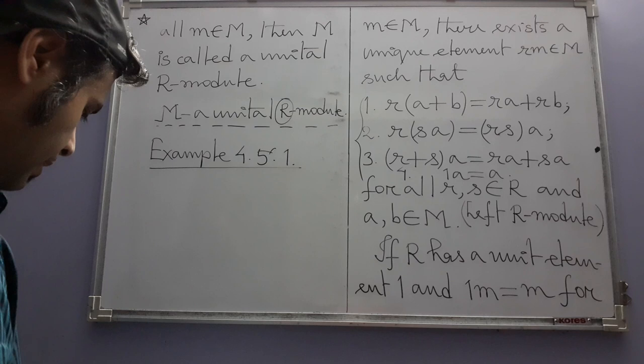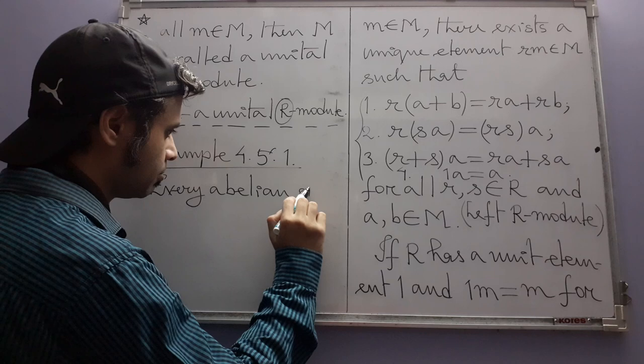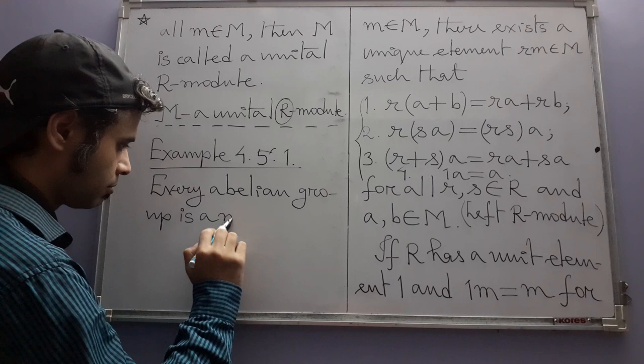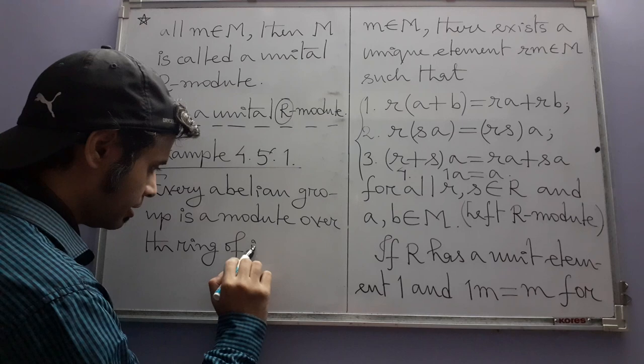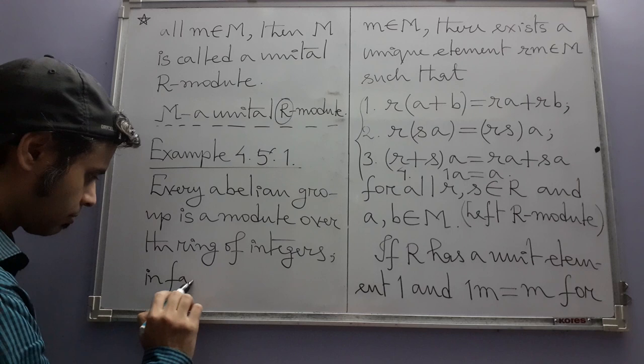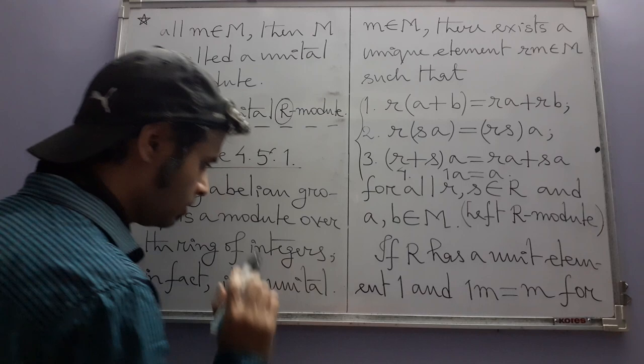The first example looks and sounds very nice: every abelian group is a module over the ring of integers, and in fact it is unital. This is a statement we will prove in one of the exercises, but let us at least see what the operations are.